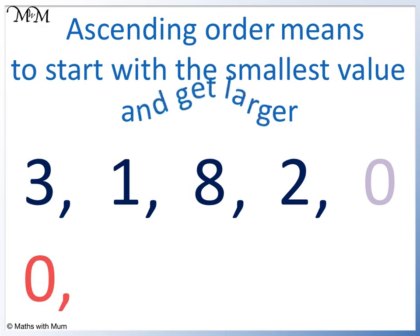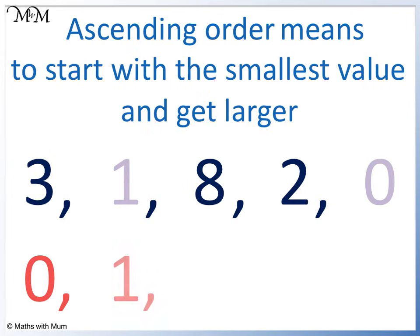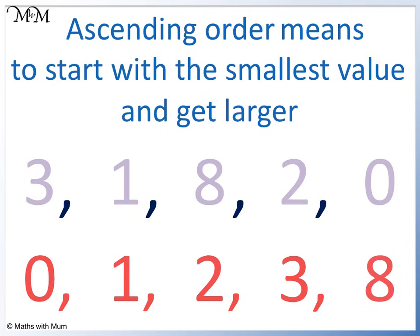Now we get larger. After 0, we have 1. Next, we have 2. Next, we have 3. And finally, we have 8, which is the largest number on our list. It goes last in ascending order.